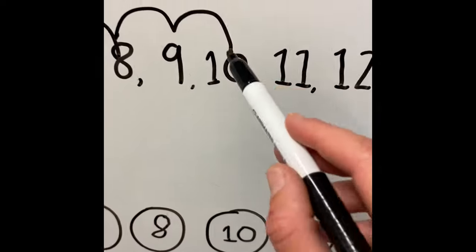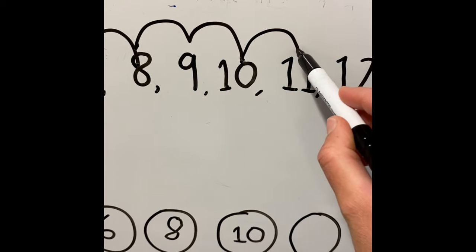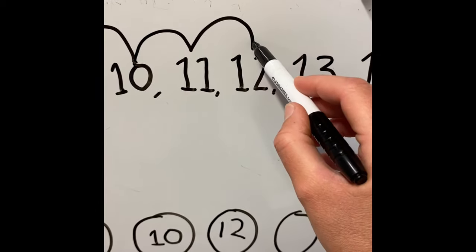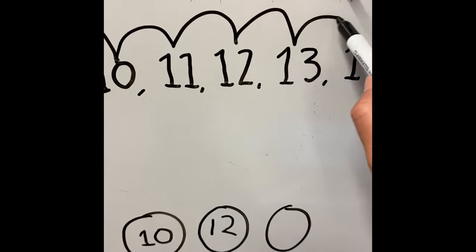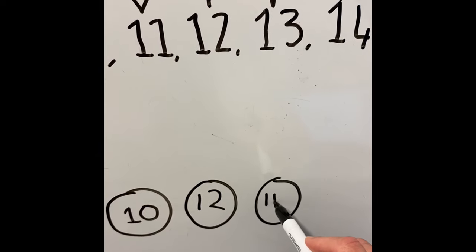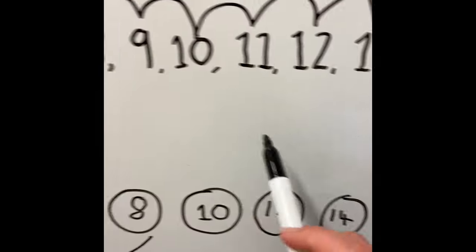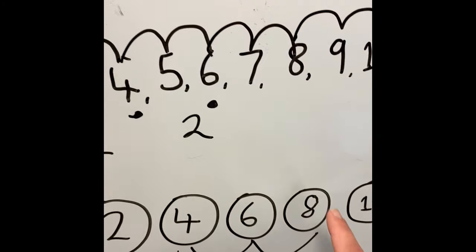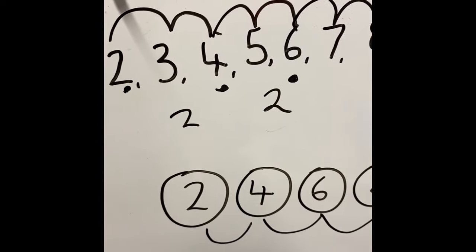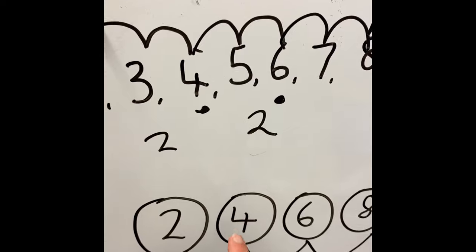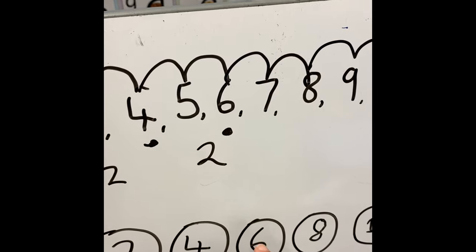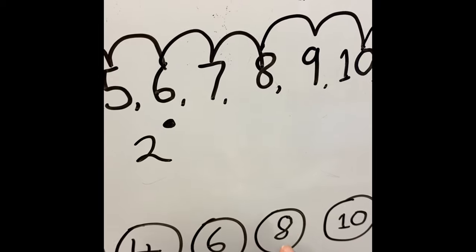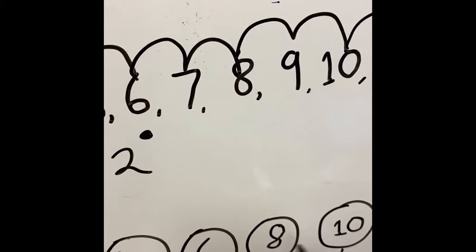So from ten we need to add two more jumps. One, two, which gives us 14. It's a really good way by counting how many jumps are between the numbers that we already have, we can work out the answer. So we knew there was two jumps between two and four, two jumps between four and six. So we made a guess that there was two jumps from six to eight and we checked it by having two jumps from eight to ten.